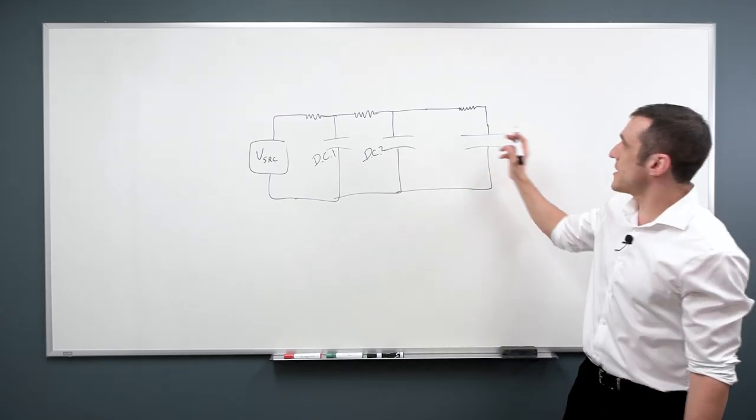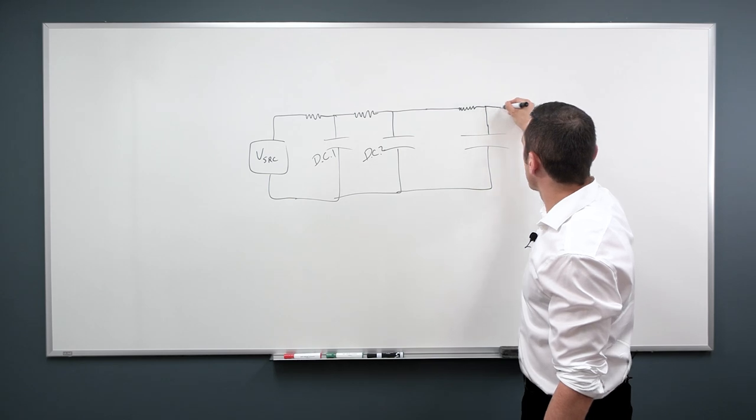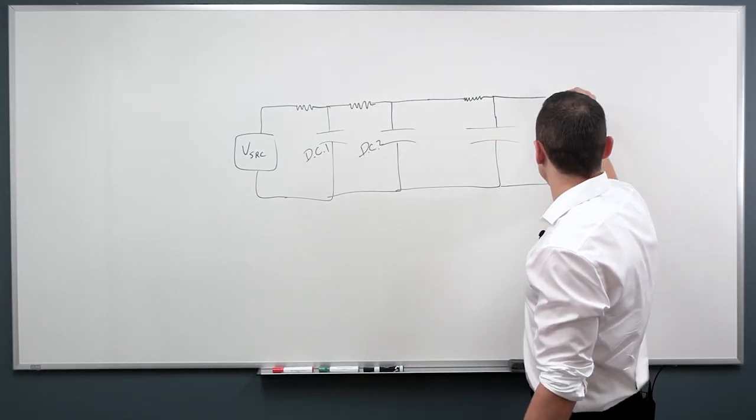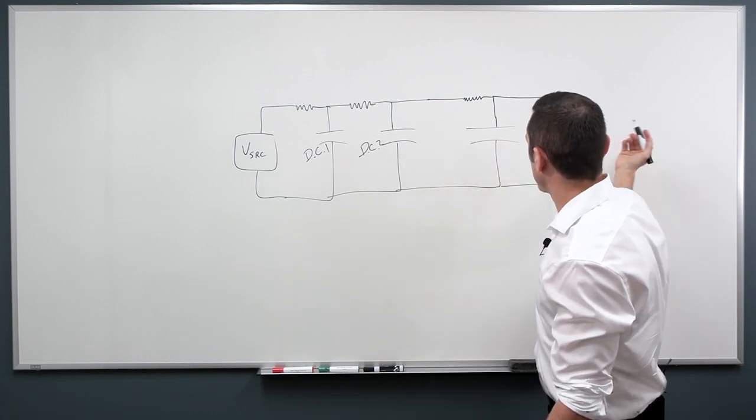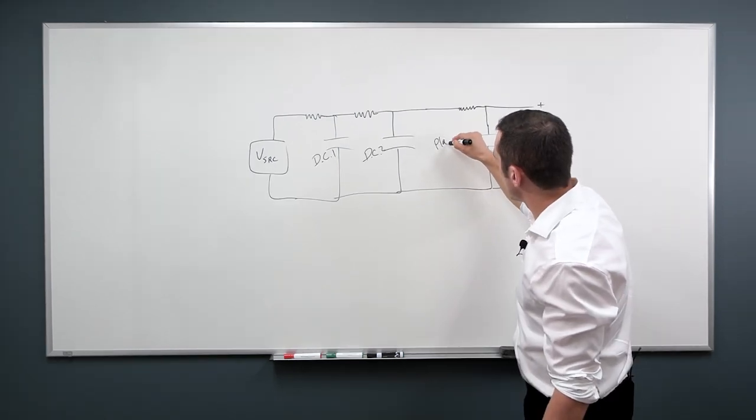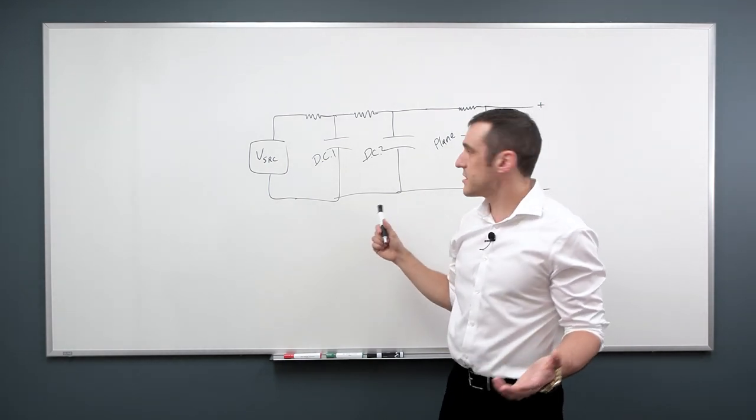And then you have your plane capacitance. Your plane capacitance here also modeled as a very large capacitor. All of this is in a kind of a lumped RC network. And then eventually you get to your output plus and minus. And so this will connect to your integrated circuits. Here, this is your plane capacitance. And so this is really a simplified model of what happens in the PDN.